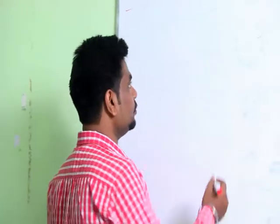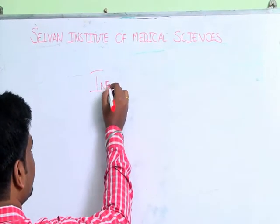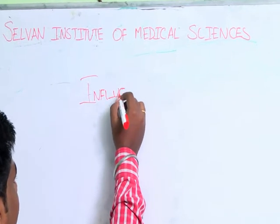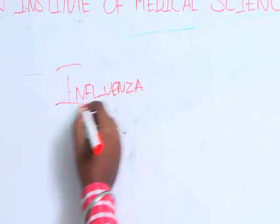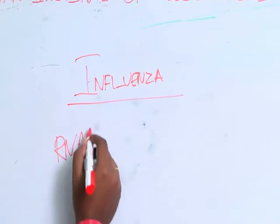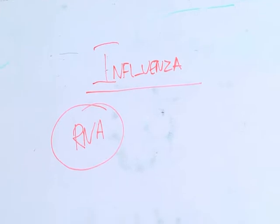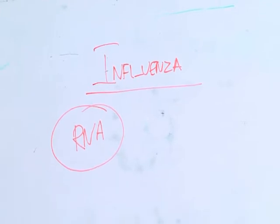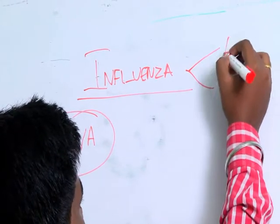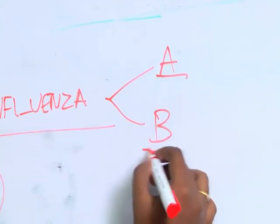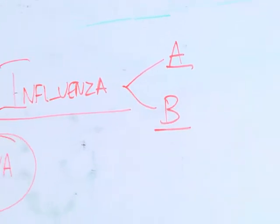Today we'll be speaking about influenza, its replication cycle, and some drugs which act on the replication cycle of influenza. Influenza belongs to a RNA group of viruses called orthomyxoviruses — that is the group which influenza belongs to. Influenza is mainly divided into influenza A and influenza B viruses.